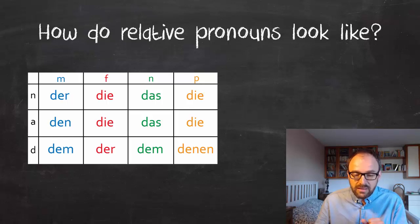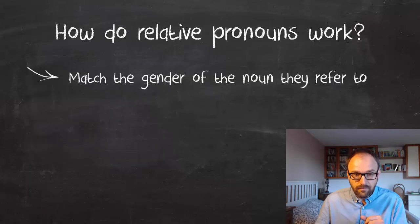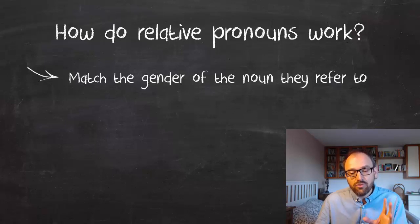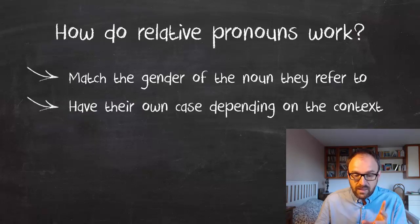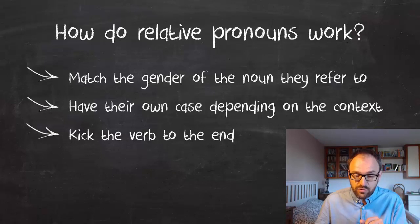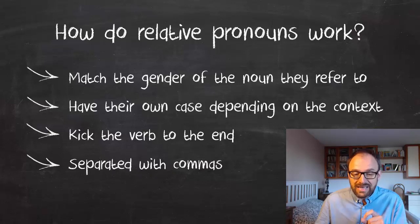Now this might look a bit confusing, and the purpose of this lesson is to help you understand this chart. Here's a general overview about how relative pronouns work: they match the gender of the noun they refer to; they have their own case depending on the context; they kick the verb to the end; and they are separated with commas.